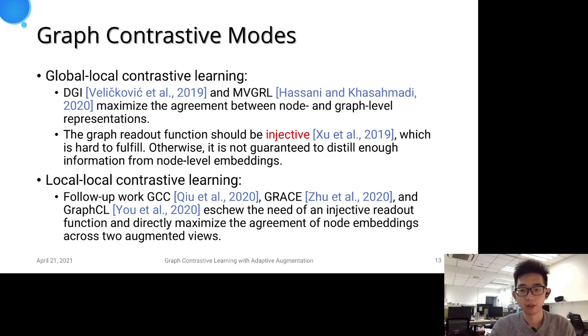The global-local contrastive learning mode can be seen as a proxy for the local-to-local mode, but the graph readout function should be injected to distill information from the node-level embeddings.